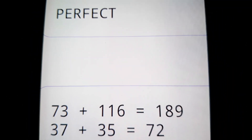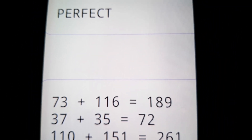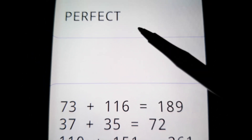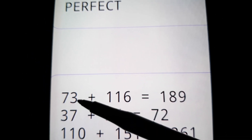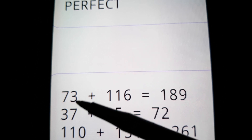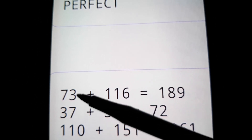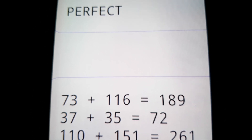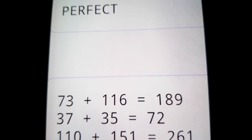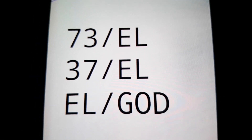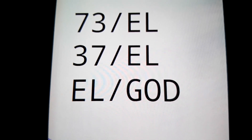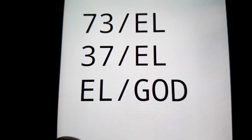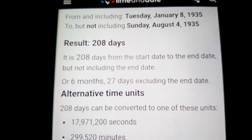The word 'perfect' — pay attention — it equals 73-37. Notice it's the same numbers. And it's the most important two numbers because 73-37 looks like the word EL. EL means God in Hebrew. That's what makes it so important.